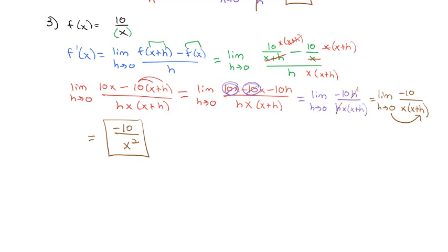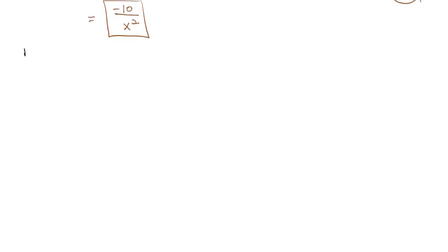This formula tells us the rate of change, or the slope of the tangent line, at any given point. Now, this formula does take a little while to work out, and as problems become more complex, it can get very ugly very fast. So what we like to use whenever possible are shortcuts, and one of the most common shortcuts we'll use is the polynomial shortcut.